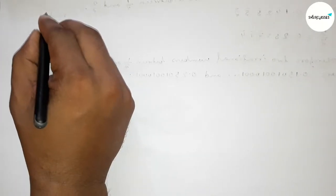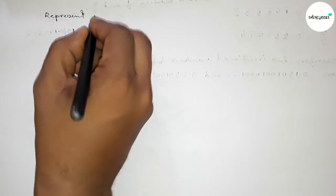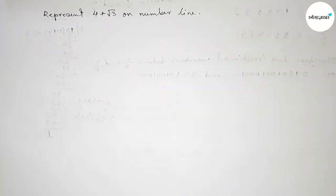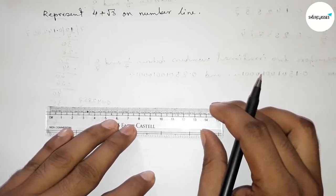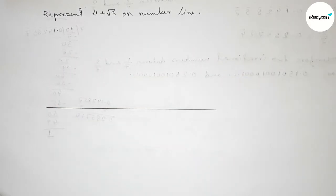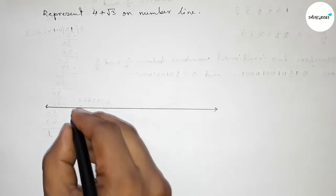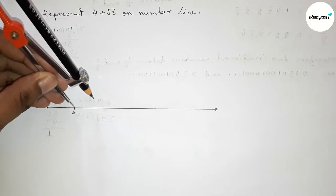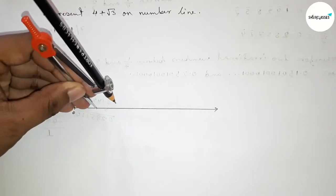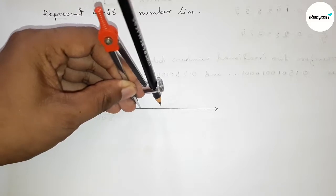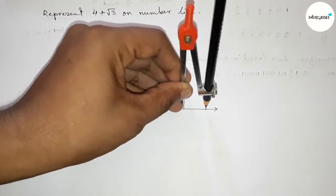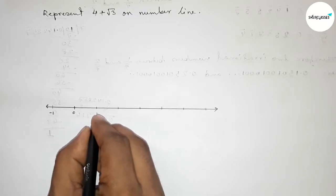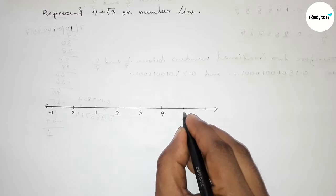Hi everyone, welcome to Essay Share Classes. Today in this video we have to represent 4 plus root 3 on a number line in an easy way. So let's start the video. First of all, we have to construct a number line. Drawing a line of any length and taking arrow marks on both sides, then marking the numbers using a compass with one unit length — marking minus 1, 1, 2, 3, 4, 5, and 6.